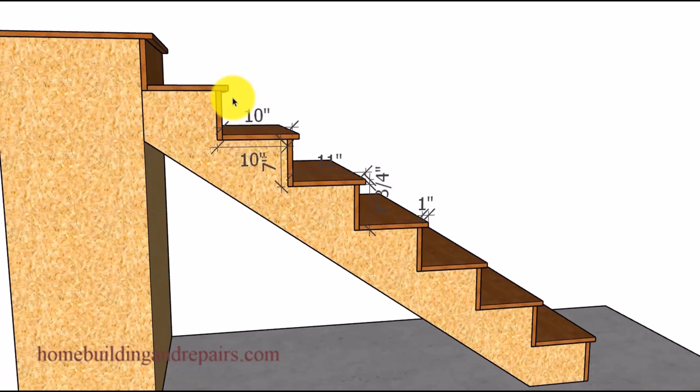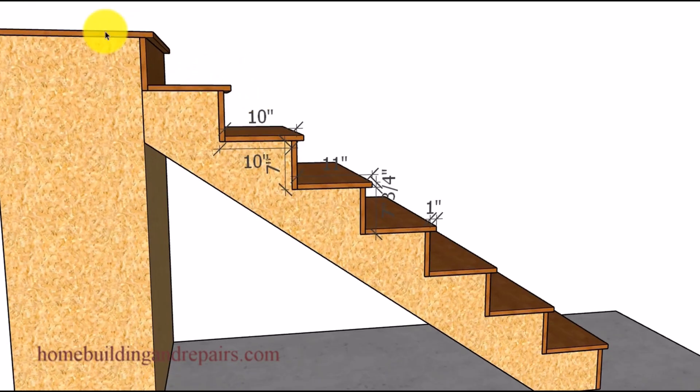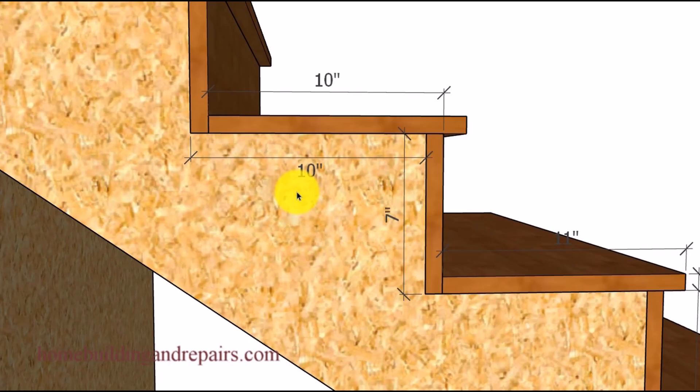Here's what it would look like if we had the 10 inch layout measurements on our stringers along with the 11 inch wide treads providing us with a one inch overhang. Here we have 10 inches from corner to corner, not 11 inches, and then we have our seven inches.